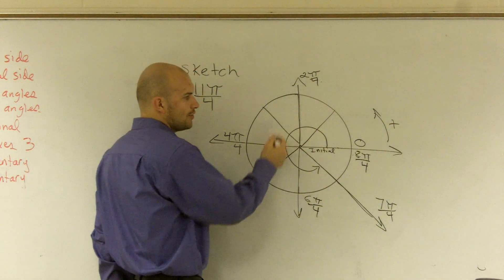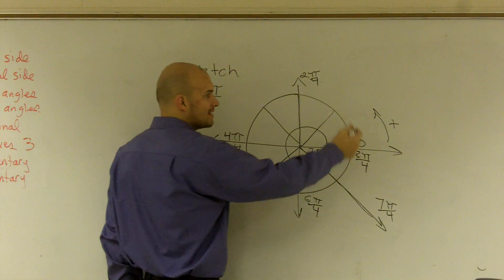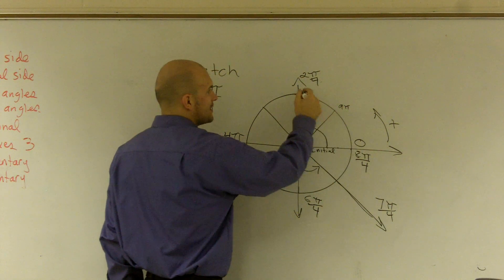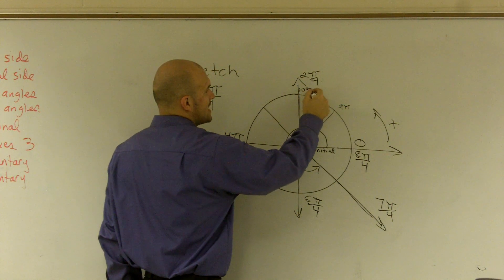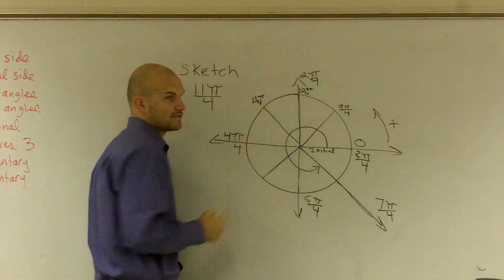Well, think about it this way. I already went all the way around, so you know this is 8π, right? So then you just keep on counting. This is 9π, 10π over 4. So therefore, 11π over 4 is over here.